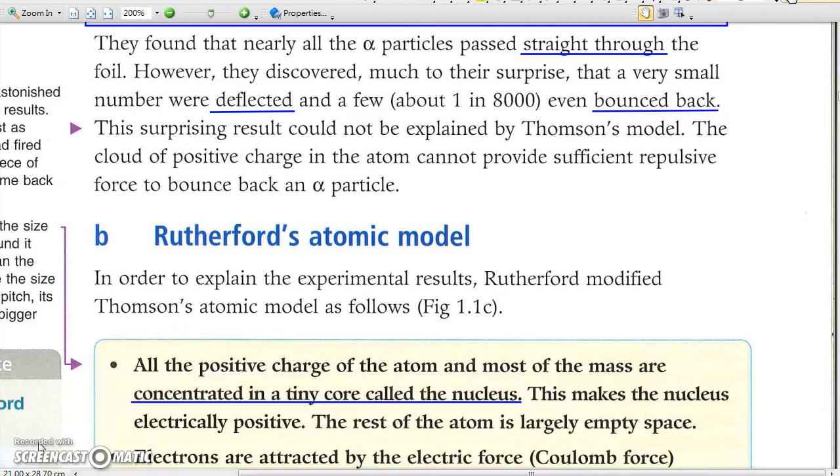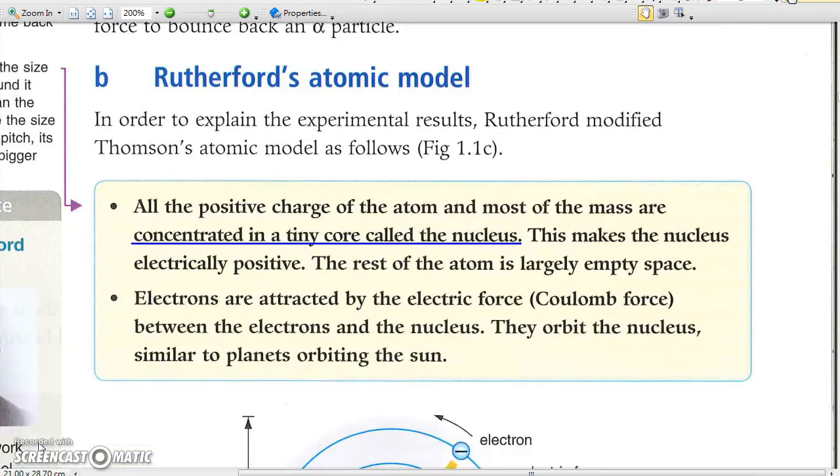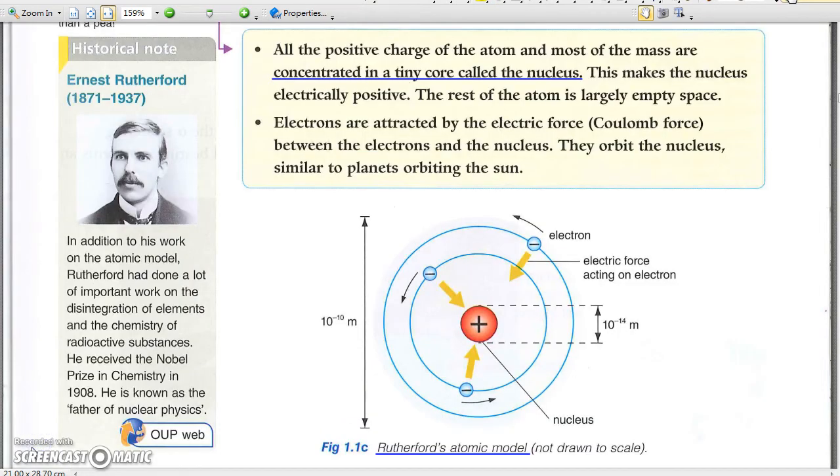Rutherford's atomic model. Rutherford's model suggested that there is a very small nucleus inside an atom, with most of the mass and positive charges concentrated there. Negative electrons orbit the positive nucleus, held by Coulomb force, the electrical attractive force between positive and negative charges.